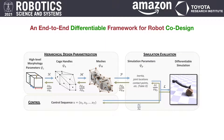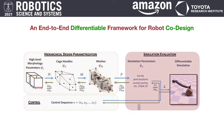In this work, we propose a differentiable framework for robot co-design. At the core of our framework is a deformation-based design parameterization and a differentiable rigid body simulation specialized for contact-rich tasks.